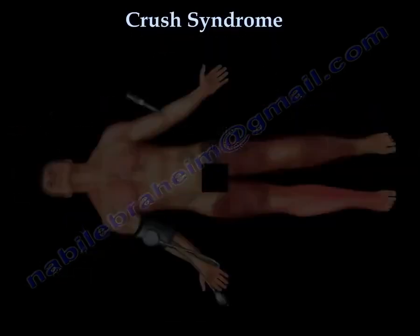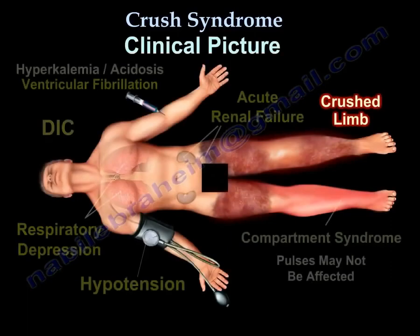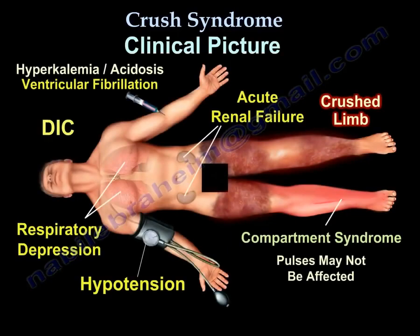The clinical picture is presented in this diagram. You can see hypotension, the crushed limbs, acute renal failure, DIC, and compartment syndrome. The pulses may not be affected. You can also see respiratory depression, ventricular fibrillation, hyperkalemia, and metabolic acidosis.